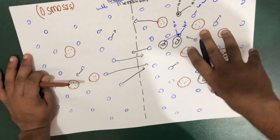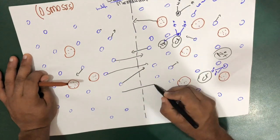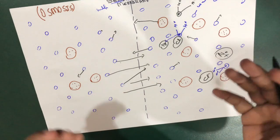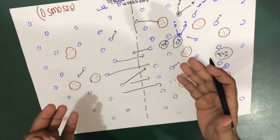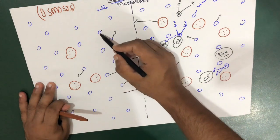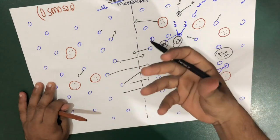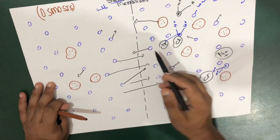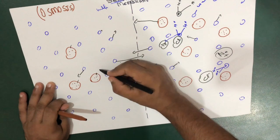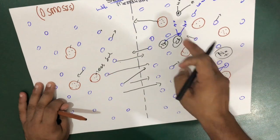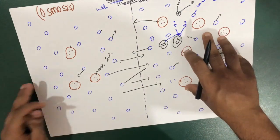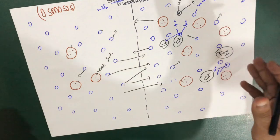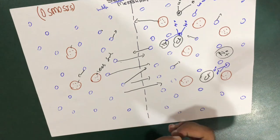If there is a lot of solute on one side, water gets sucked from the other side and moves toward the concentrated side. This is called osmosis. The proper definition: osmosis is a process by which the movement of solvent tends to pass through a semi-permeable membrane from a less concentrated solution into a more concentrated solution.